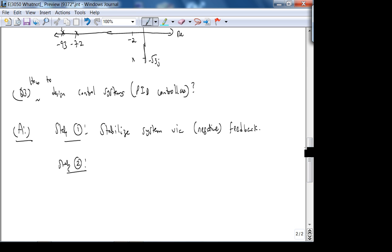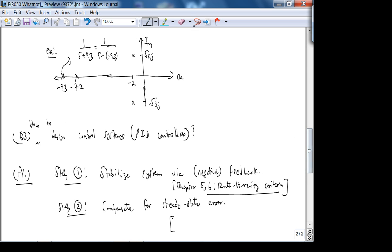Step two is we compensate for steady-state error. Stabilize system via negative feedback is basically chapter 5. We did cover this when we simplified that feedback system. But then compensating for steady state, this is chapter 5 and chapter 6. There is something called the Routh-Hurwitz criterion that tells you how to find the right half plane poles which lead to instability of your system without solving for the roots of the denominator for a rational transfer function.